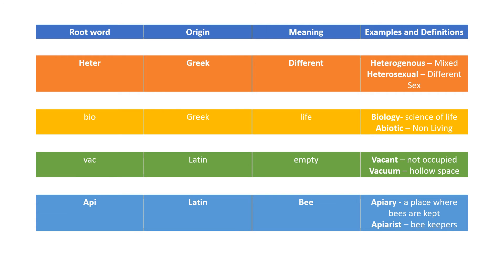The next word is api. It is a Latin origin word which means bee. For example apiary, a place where bees are kept and apiarist, beekeepers.